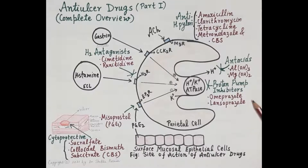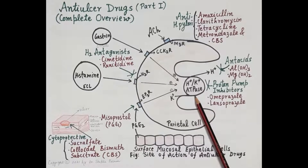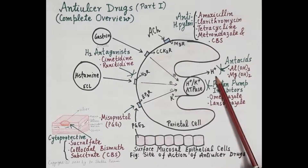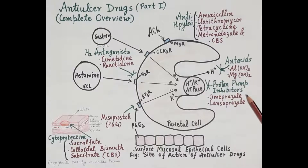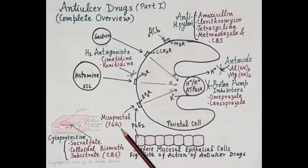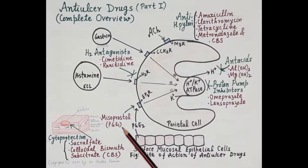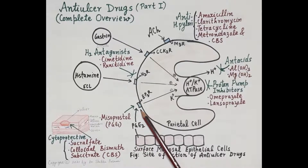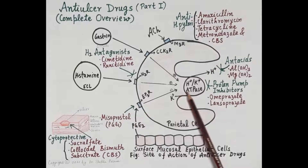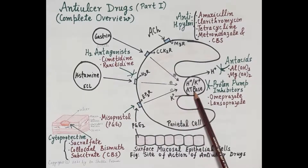Proton pump inhibitors like omeprazole and lansoprazole inhibit the hydrogen-potassium ATPase enzyme — the proton pump — thereby inhibiting the final common pathway required for secretion of gastric acid. Thus, proton pump inhibitors are the most efficacious and most effective anti-ulcer drugs. Misoprostol, a prostaglandin E1 analog, binds to prostaglandin receptors in parietal cells and thereby inhibits the hydrogen-potassium ATPase pump, inhibiting acid release.